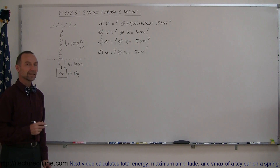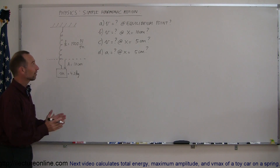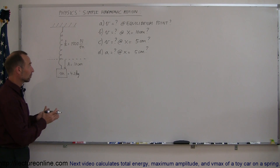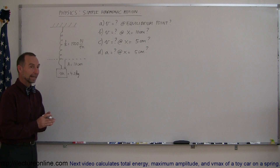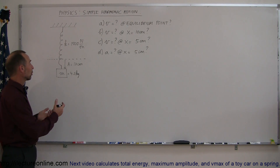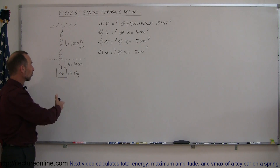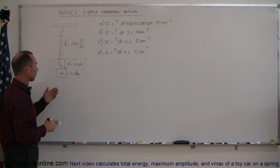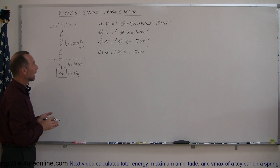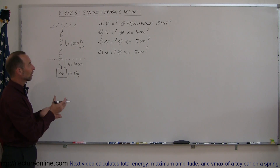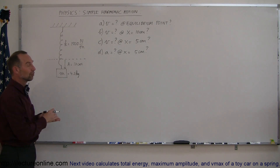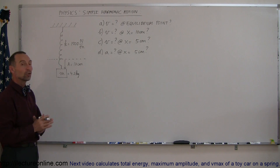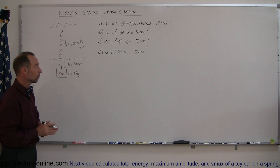Welcome to Electron Online. Here's a nice example of how to deal with simple harmonic motion. In this case we're going to use the energy equation because we have a mass oscillating back and forth on a spring and we want to know the velocity and acceleration as a function of position. That's how you know which equation to use.